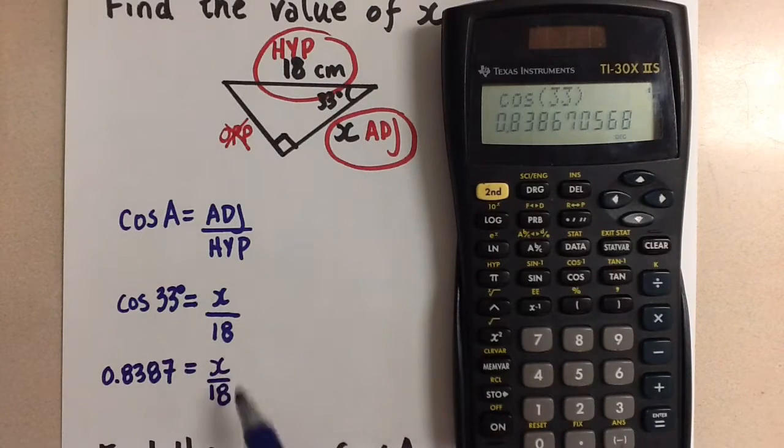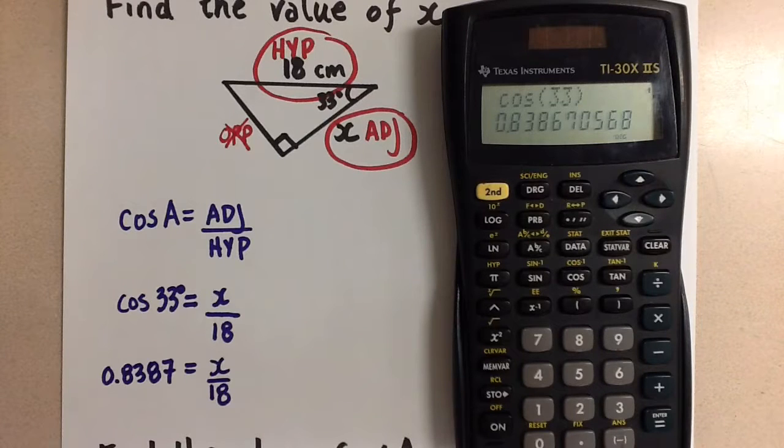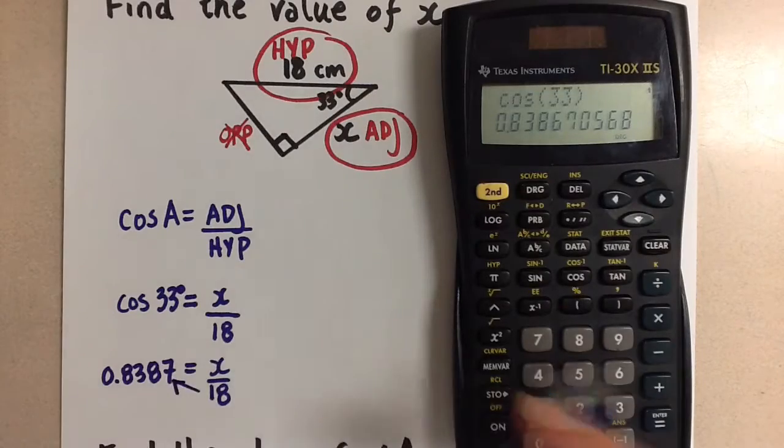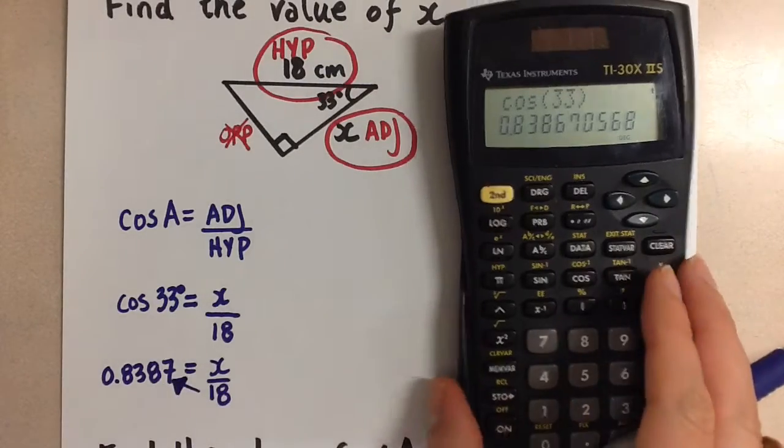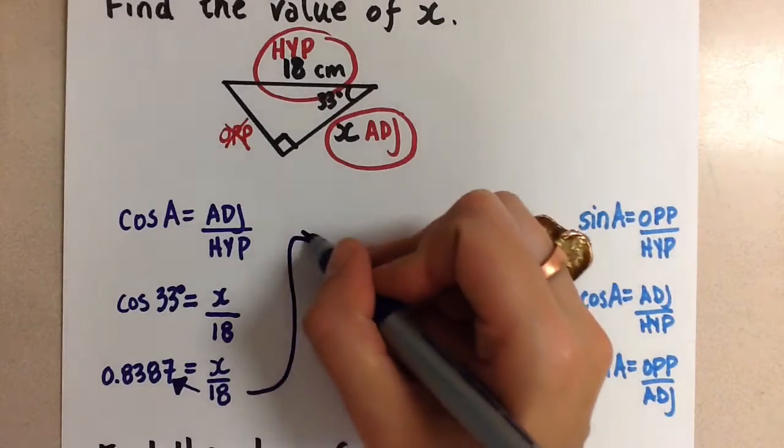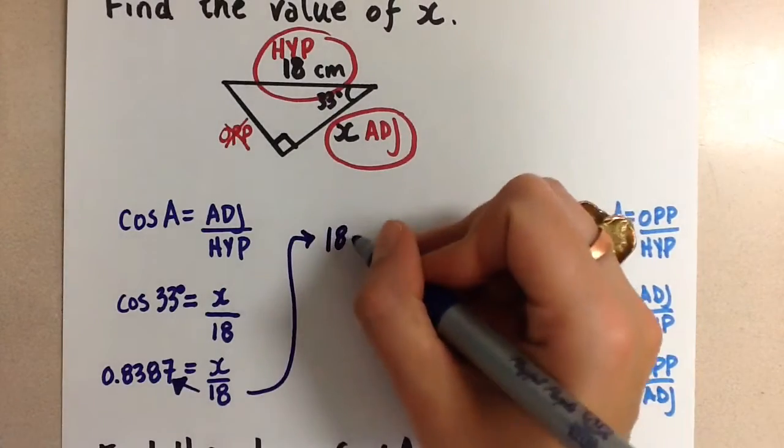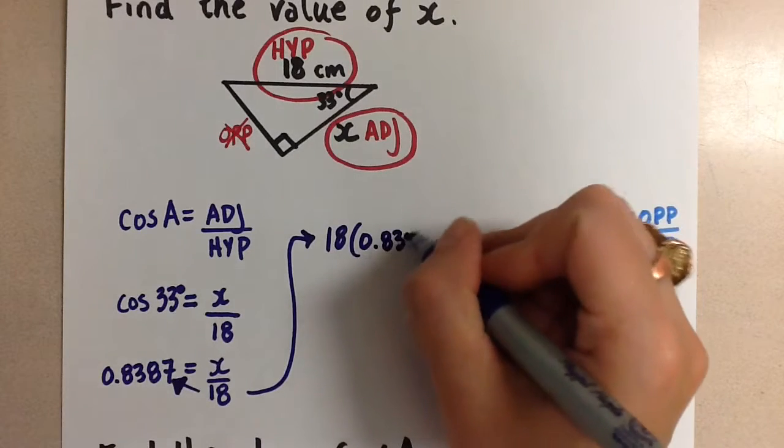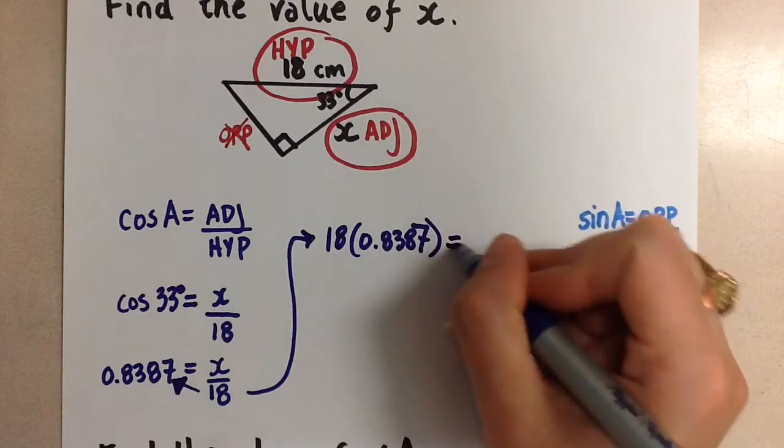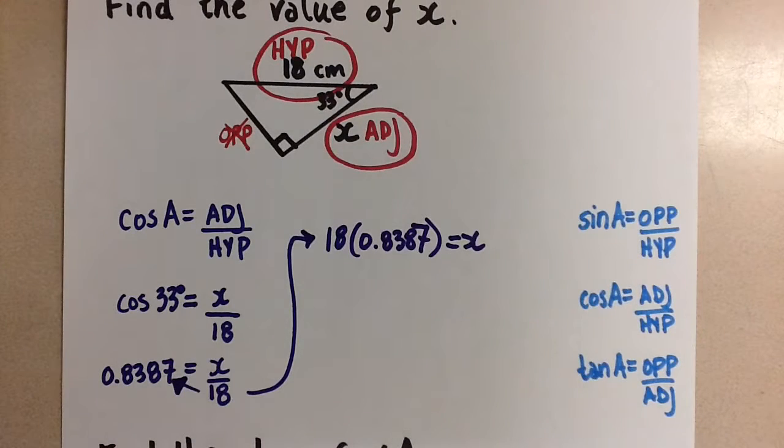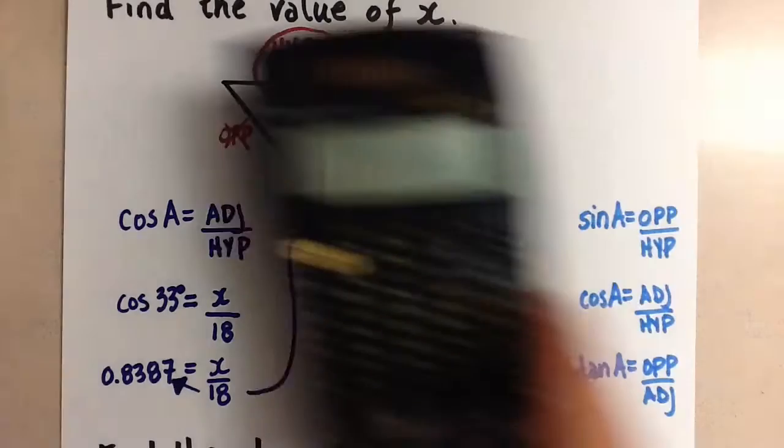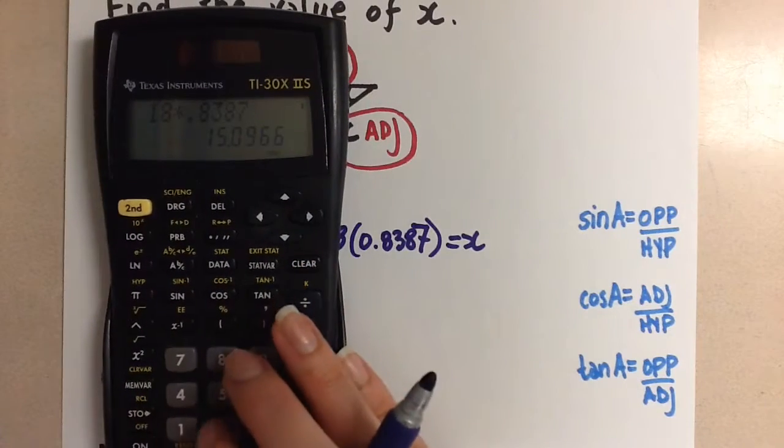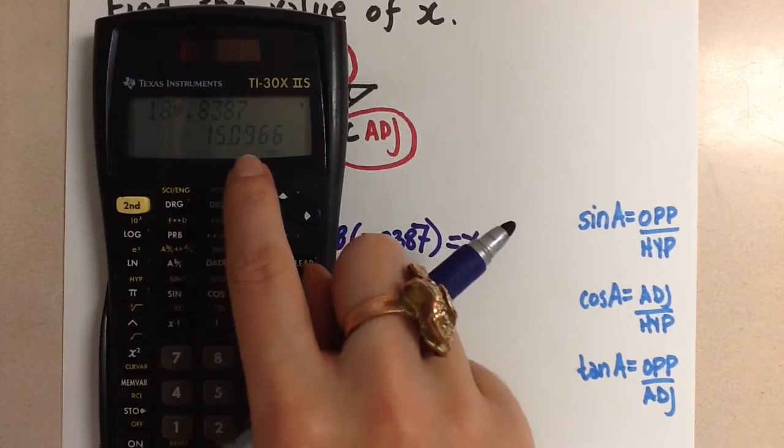Now this is a proportion like we did with similar triangles. So to solve this proportion, we can cross multiply that 18 over to the other side, and that'll get the x by itself. Let's bring our work up here. So we're multiplying 18 with the 0.8387, and that equals x on the right hand side. When we multiply that, we're going to get 15.0966.